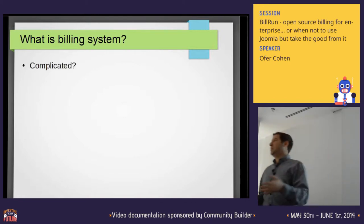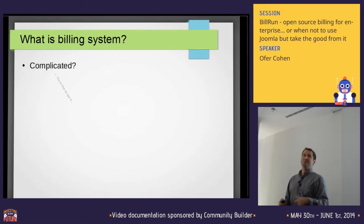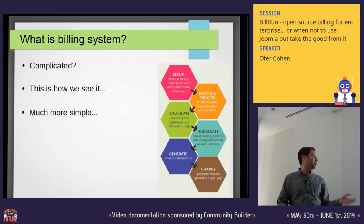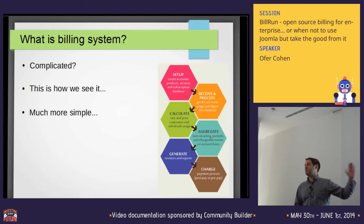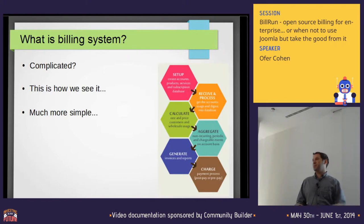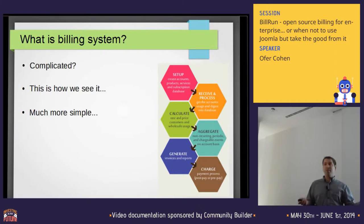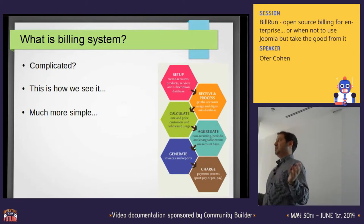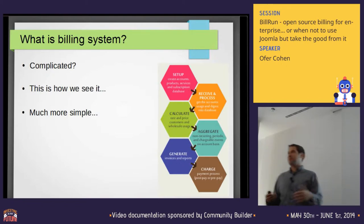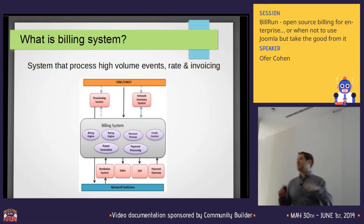Again, what is a billing system? It sounds really complicated, but we want to make it simple. We set up receiving processes, take the data, calculate its rate and identify the user — the customer. Aggregation is the part where we take and make the invoice. We need to aggregate per month or per week depending on which country it is, and generate invoices and reports. The final step is to charge — like PayPal, but for millions of customers, so it's a little bit more complicated.